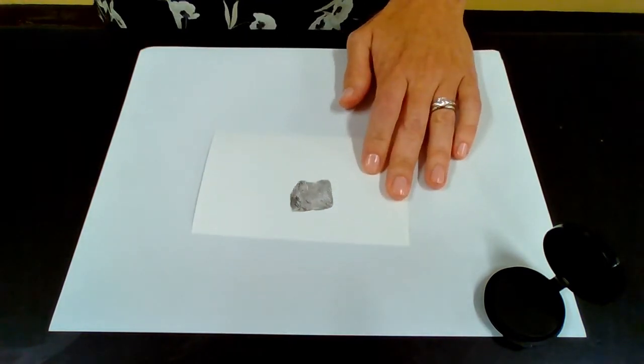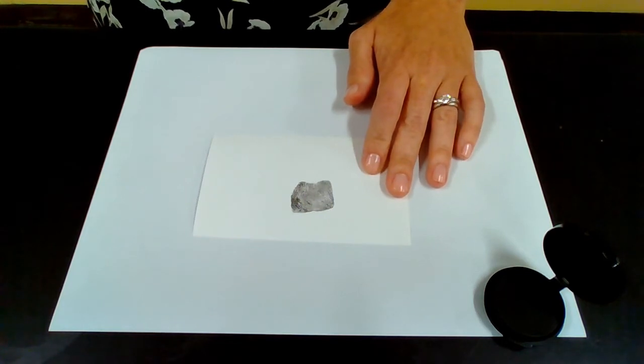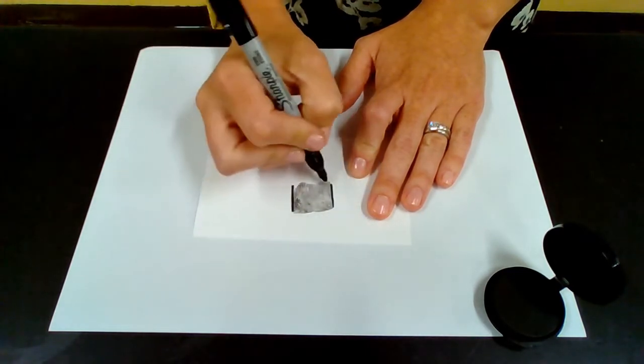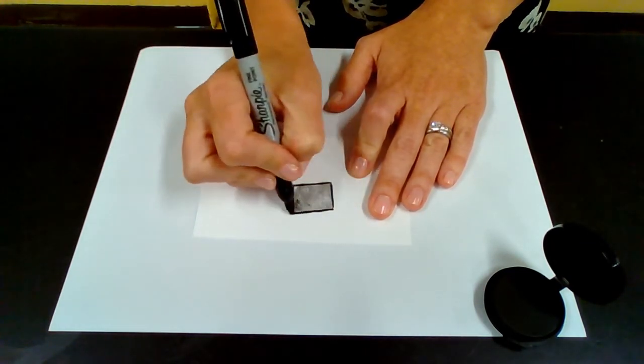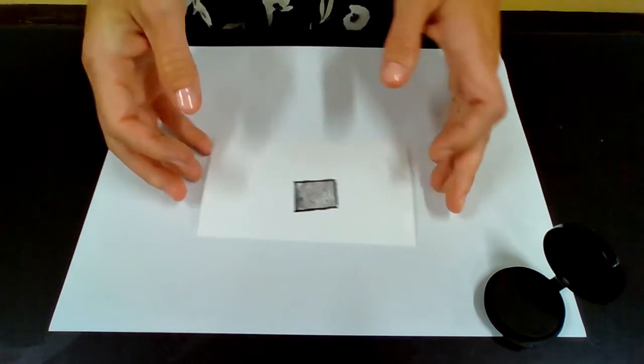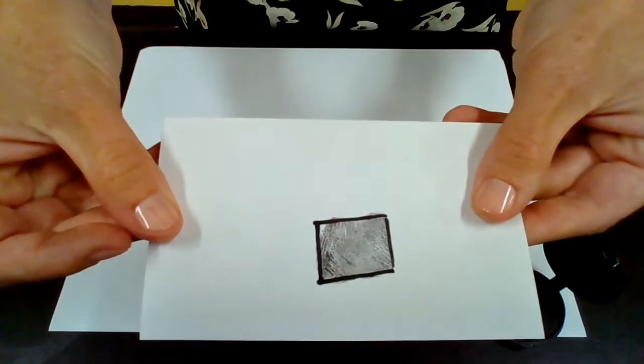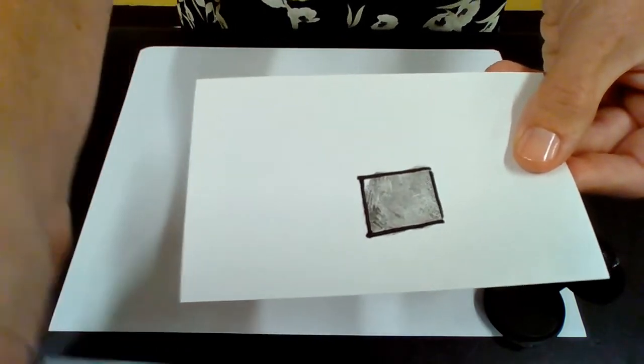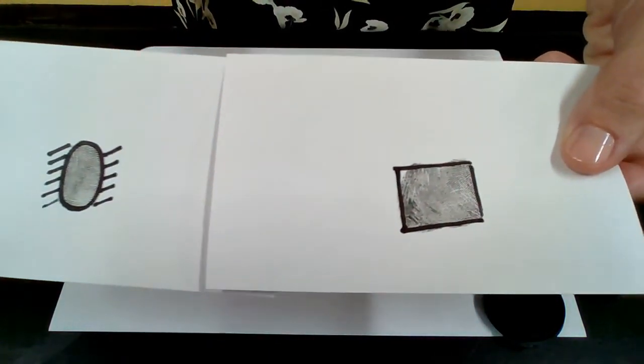And now if you look at that fingerprint that we've captured, it has a very different shape than what we saw before. This has much more of a boxy shape to it, it's a little more square or rectangular, and just allows us to see a lot more detail than what we saw before.